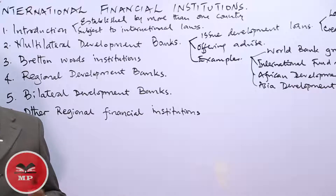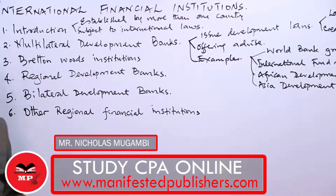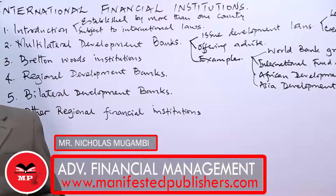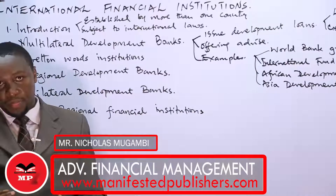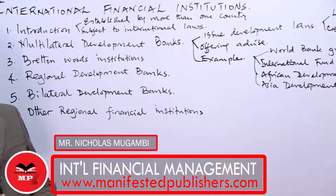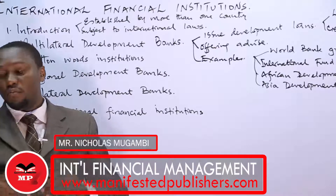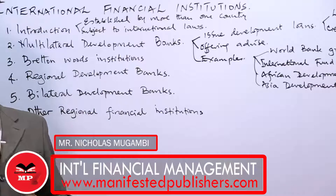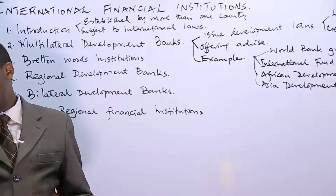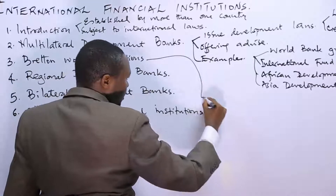From World War II there was a lot of destruction that occurred in Europe, Britain, and also world over. Countries then sat together with a core purpose to rebuild the world, Europe being one of the most affected, and put international cooperation in managing global financial systems. So Bretton Woods institutions, we can highlight them here.